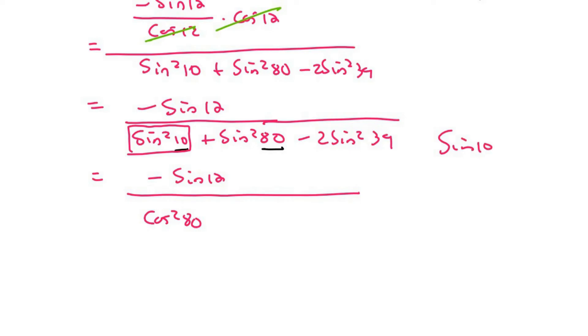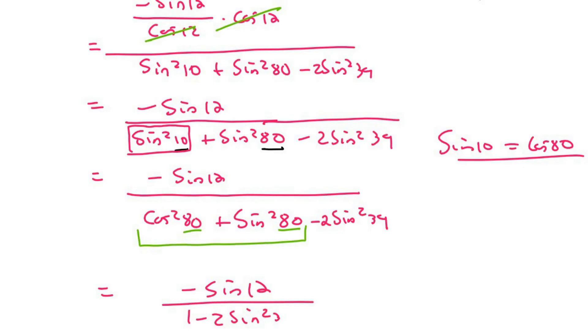That is because sin 10 is the same as cos 80 because of co-functions. And then this one I'm going to leave as it is. And then I'm going to end up with minus 2 sin squared of 39. Now remember in grade 11 when you have the sin squared plus the cos squared of the same angle 80 and 80, that equals to 1. As long as those angles are the same. So it's 80 and 80. So that's just going to be equal to 1. So what we end up with is 1 minus 2 sin squared of 39.